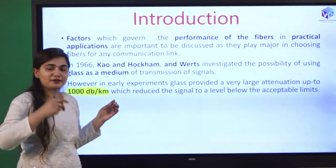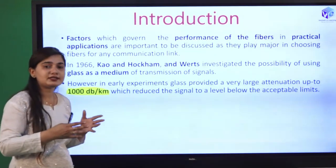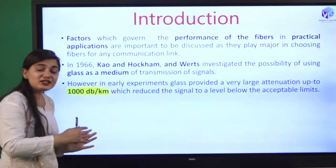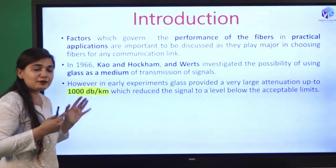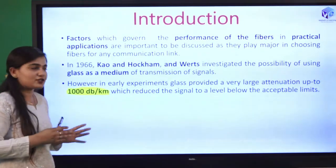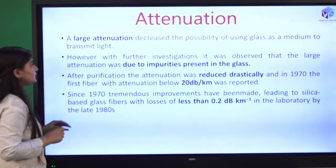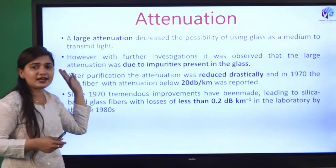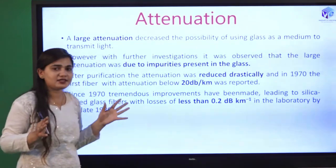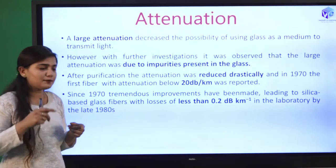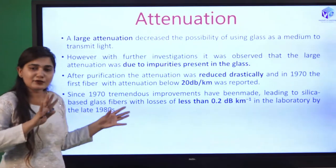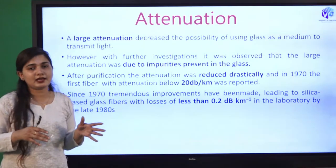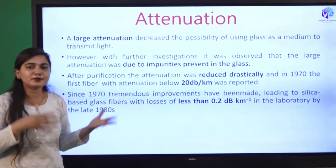With attenuation that high, I cannot propagate my signal over a longer distance — 1000 dB loss per kilometer. I cannot use glass as a channel for the propagation of light. Large attenuation decreases the possibility of glass as a medium to transmit light. Further investigation found that it was not the glass itself that was the problem — it was the impurities present in the glass. So somehow, if the glass can be purified, we can reduce the attenuation.